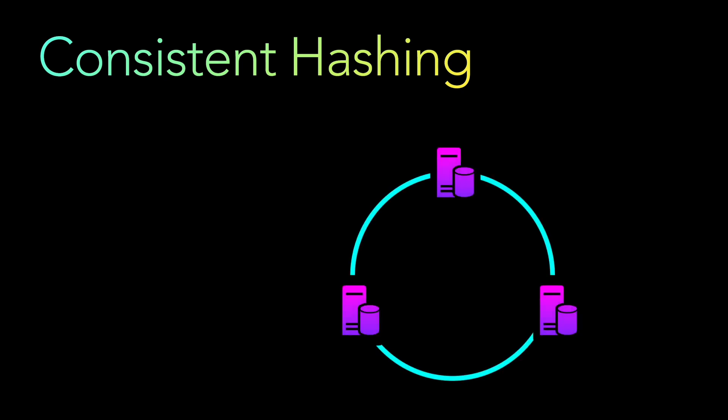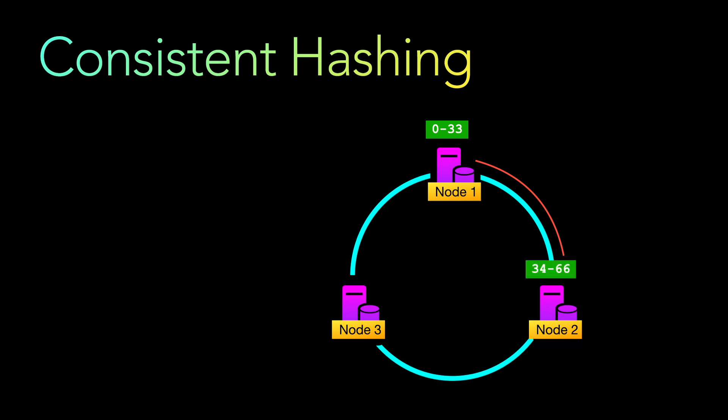Let's look at how that will happen. First, let's say we have a hash ring with three nodes — node 1, node 2, and node 3 — which are equidistant from each other, equally dividing the hash segments where data will get stored. Let's say we have a total hash segment of 0 to 99. Node 1 contains all records with a hash value of 0 to 33, node 2 contains all records with a hash value of 34 to 66, and node 3 contains all records with a hash value of 67 to 99.